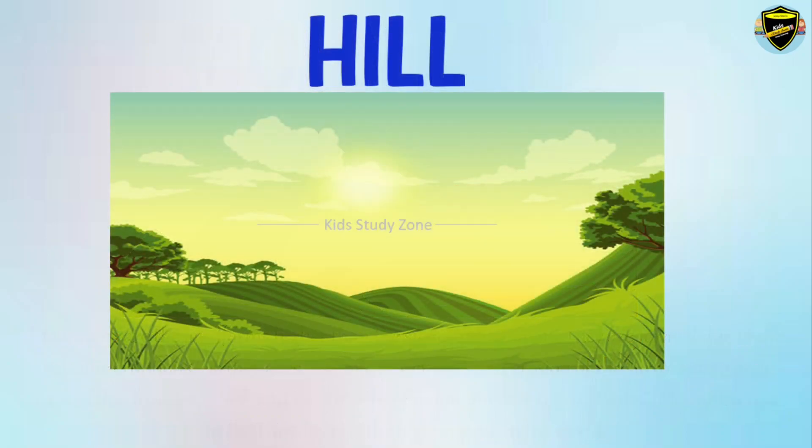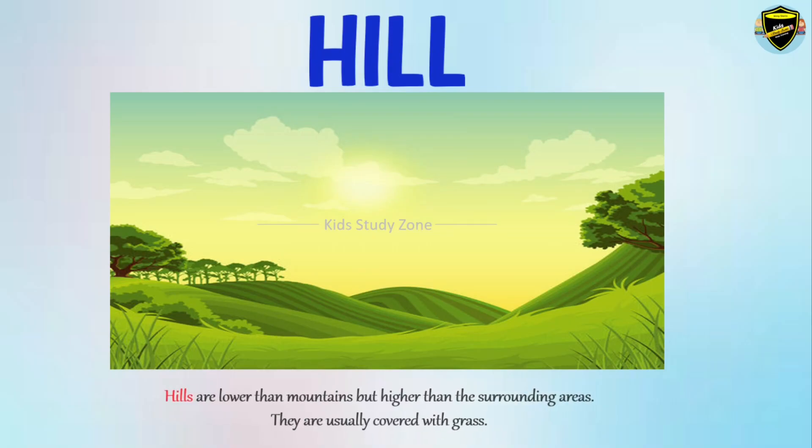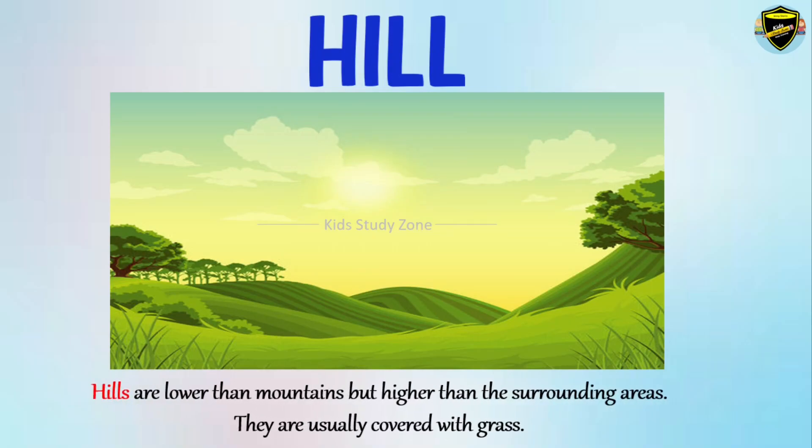Hill. Hills are lower than mountains but higher than the surrounding areas. They are usually covered with grass.